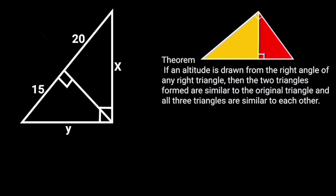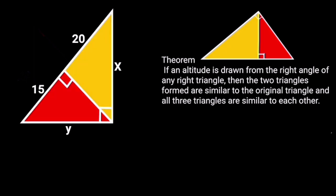From this theorem, let's observe in our diagram that the altitude is drawn from the right angle of the triangle. So the triangles formed are similar to the original triangle.